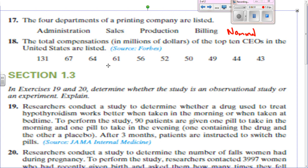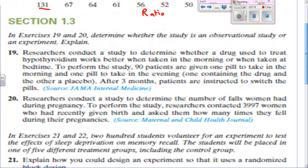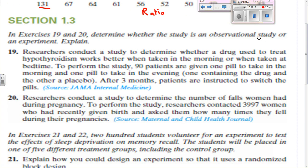That takes us to Section 1.3: determine whether it's observational or experimental. Researchers conduct a study to determine whether a drug for hypothyroidism works better taken in the morning or at bedtime. 90 patients are given one pill in the morning and one in the evening — one containing the drug and the other a placebo — and after three months, patients switch pills. This would be an experiment, because they're switching pills and using a placebo. Remember, they never give a placebo in an observational study.